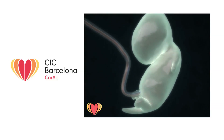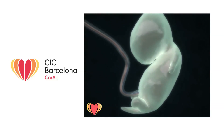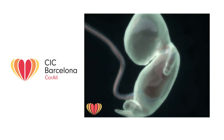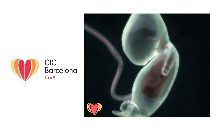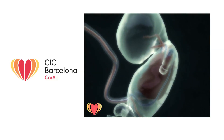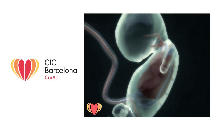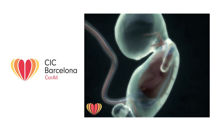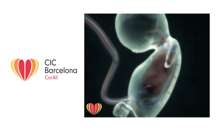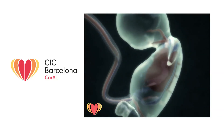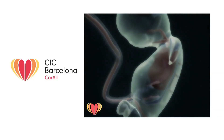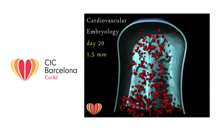At about day 13, the first mesoangioblasts form. These cell clusters are progenitors of blood vessels. From now on, organs and systems of the human body begin to develop. At day 20 of pregnancy, the embryo measures 1.5 mm. The blood vessels contribute in heart tube formation.